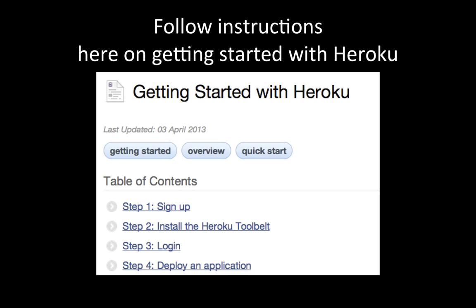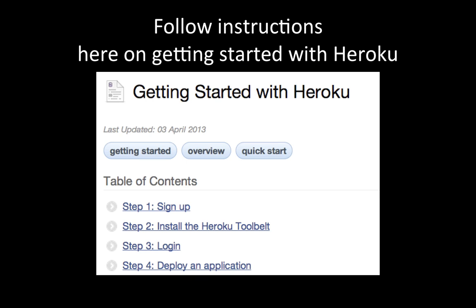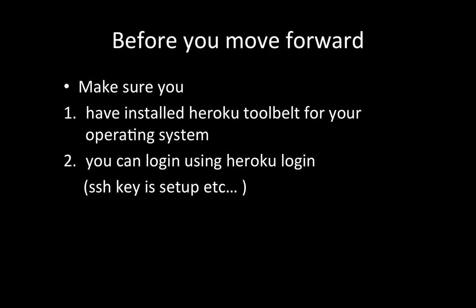This is a pretty important document that I want you to follow — it's found on the Heroku Getting Started page. When you create an app, it has the link to get started with Heroku, so follow that. Make sure you've gone through all three steps. I can't emphasize this more: make sure you have installed HerokuToolBelt, you can log in to Heroku, and you have set up SSH keys as well.